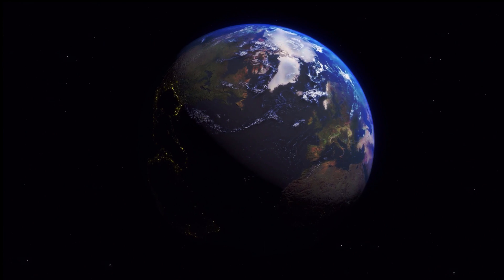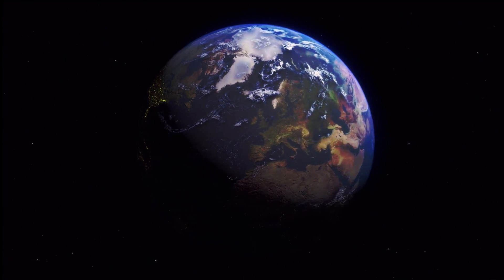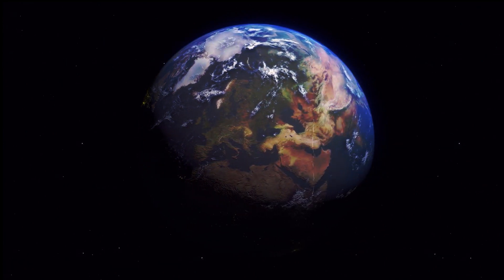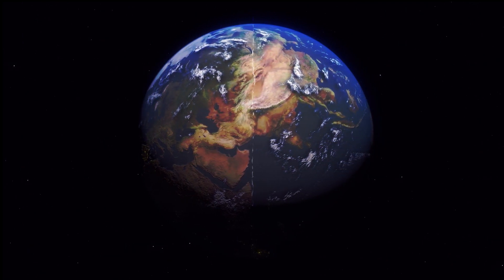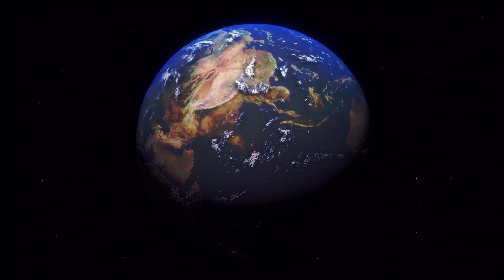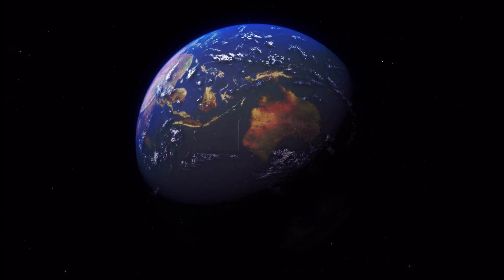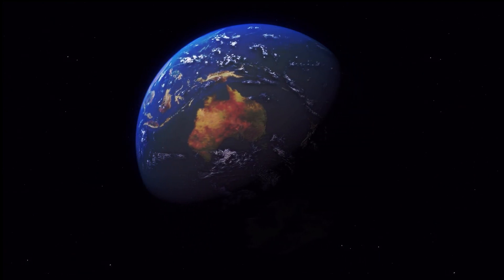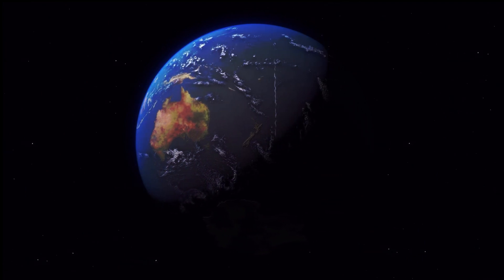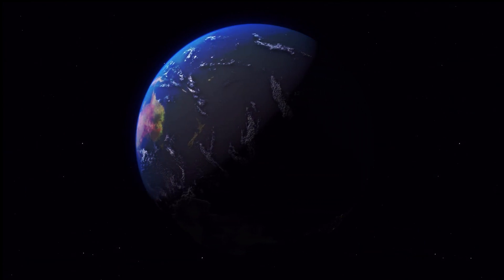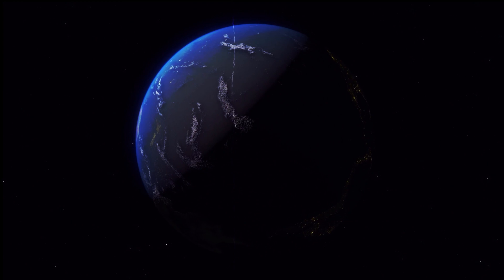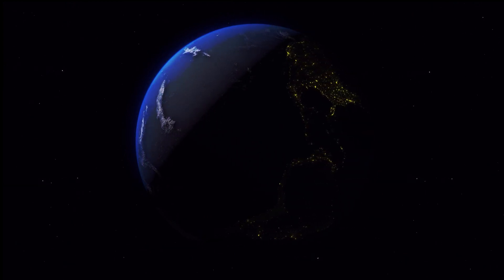In Earth's crust Scandium is not rare. Estimates vary from 18 to 25 parts per million, which is similar to the abundance of cobalt at 20 to 30 parts per million. Scandium is only the 50th most common element on Earth but it is the 23rd most common element in the sun. However, Scandium is distributed sparsely and occurs in trace amounts in many minerals.